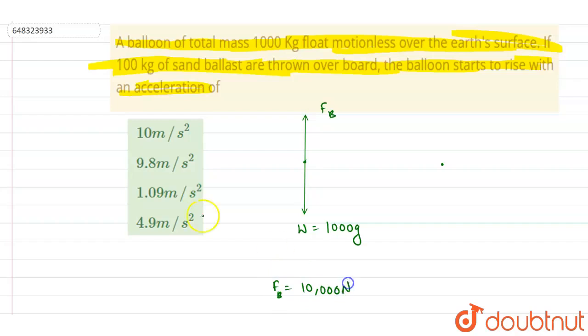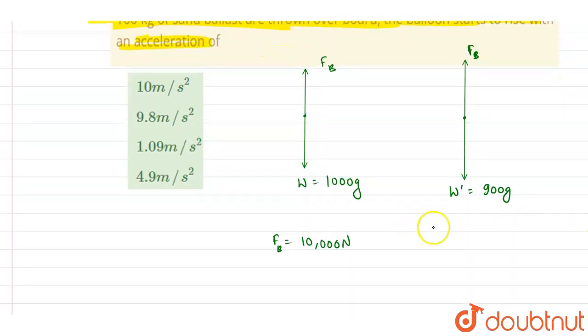Now if you see here, the weight is decreased since 100 kilogram weight is now removed from it. Right, so if you see, this is 900g. So if you see here, it will be the net force in the upward direction.